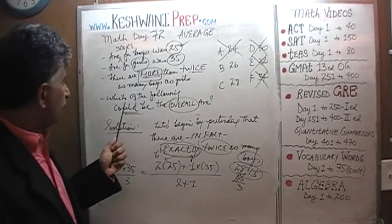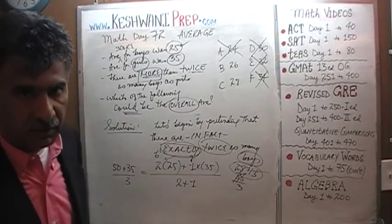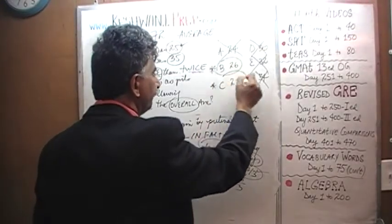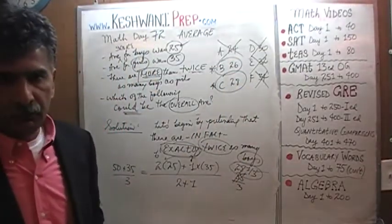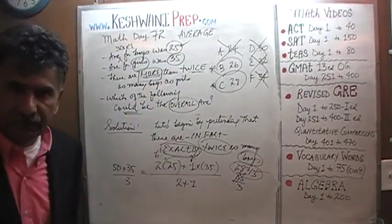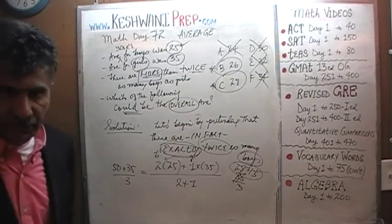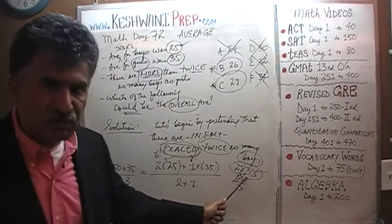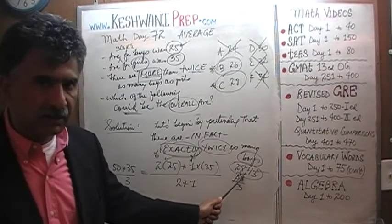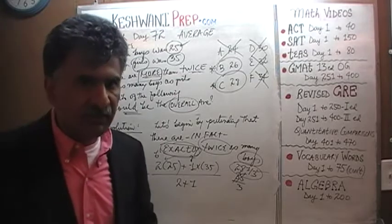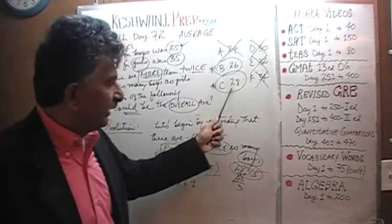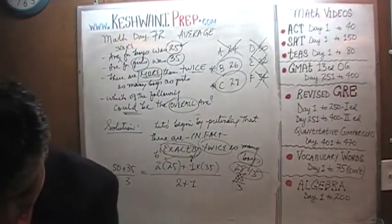The question was: which of the following could be the overall average? The average cannot be less than 25, cannot be more than 35, and now we know it has to be less than 28 and a third — because 28 and a third would have been the average if we had exactly twice as many boys. That's it, we are done. The answer is B and C — 26 is possible and 28 is possible.